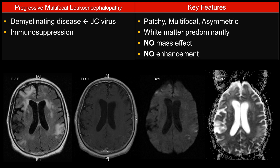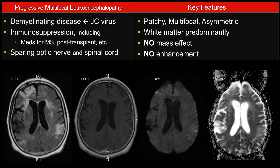Classically, PML affects immunosuppressed patients. The most classic example would be AIDS patients presenting with multifocal patchy lesions like this, but any type of immunosuppressive state can potentially put the patient at risk for PML, including post-transplant patients and patients undergoing MS treatment with immunosuppressive monoclonal antibody treatment, which rarely but potentially can cause PML.